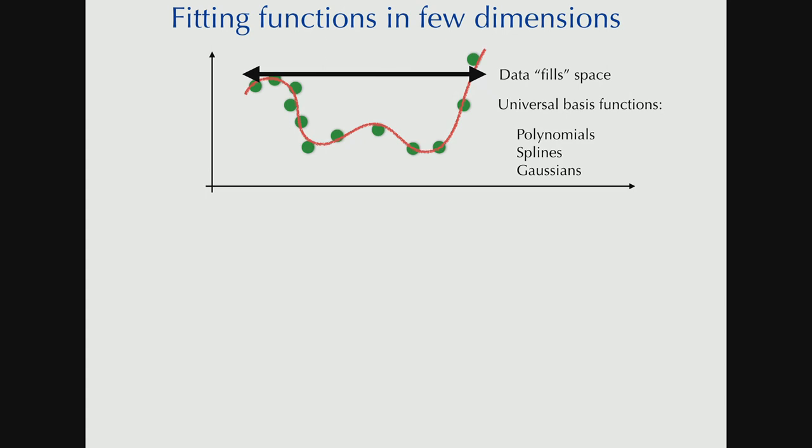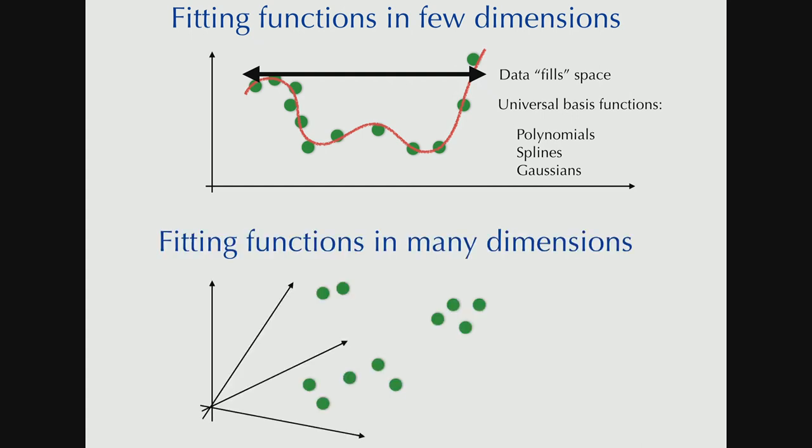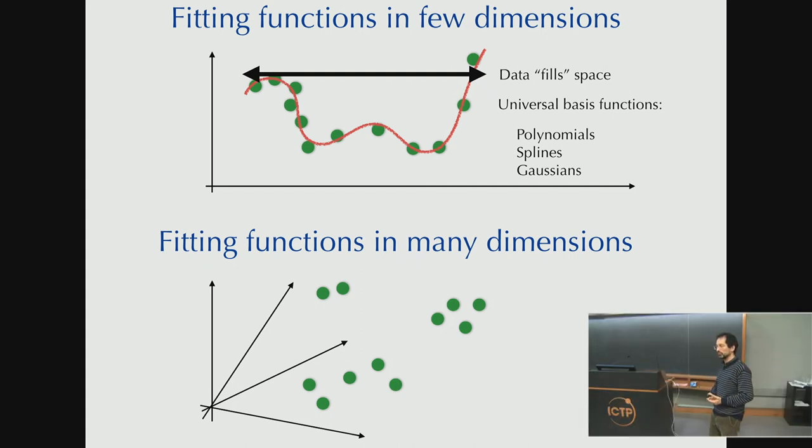And once we fill that space, mathematicians can tell us about universal basis functions, polynomials, splines, Gaussians, and they can study their convergence properties, but they all essentially lead to the same answers. And that is in contrast with fitting interactions of functions in many dimensions, which is what we're going to want to do.